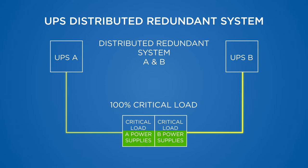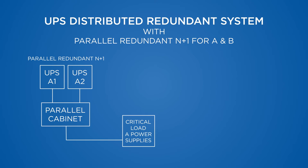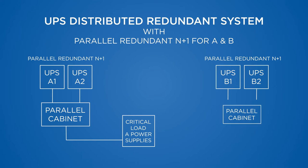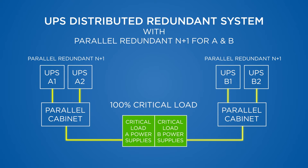The user can switch all of the downstream loads to either UPS A or B, allowing the other UPS breakers and distribution equipment to be taken offline for maintenance or load reconfiguration. A DRS is also scalable for larger applications — the end user can specify a conventional parallel redundant UPS for each side A and B with two independent distribution systems.